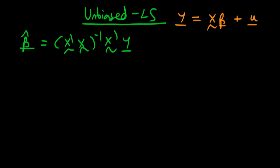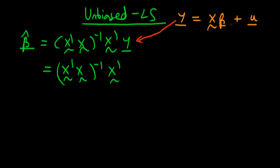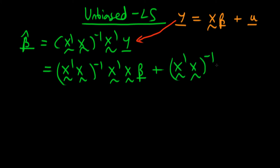We can use this expression for y to substitute in for y in the expression for beta hat. So we can write the whole thing as (X'X)⁻¹ times X' and then substituting in, I get for the first term X beta, and then a second term which is (X'X)⁻¹ times X'u.